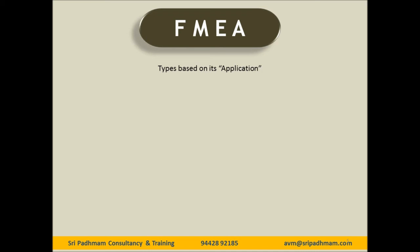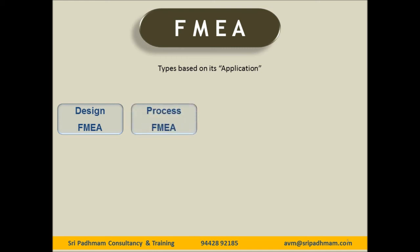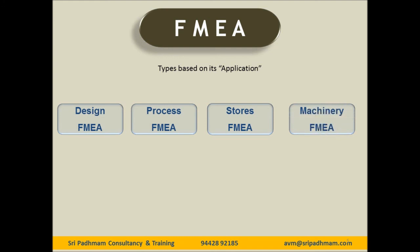Now, types of FMEA based on its application. It may happen during the design stage, which is called Design FMEA. Second is application into the process — Process FMEA, Manufacturing Process FMEA, Assembly Process FMEA. The third application is into inventory management — that is stores — called Stores FMEA.